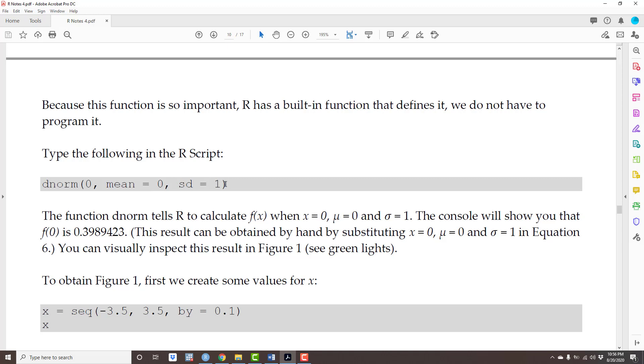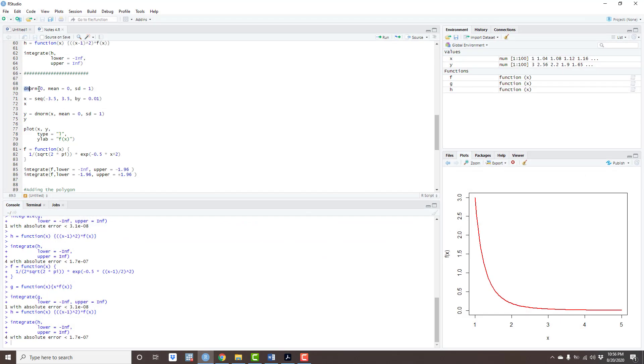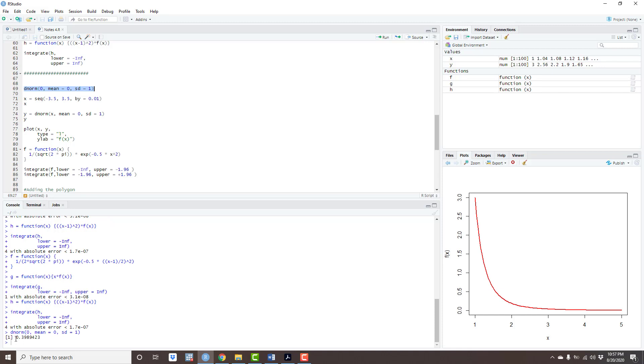d goes for density, norm goes for normal. dnorm(0, mean = 0, sd = 1). What that means is you are telling R to calculate f(0), where f is the normal distribution or the density is the normal distribution. The zero here is x = 0, the mean of the distribution is 0, and the standard deviation of the distribution is 1. The result in the console is 0.398.